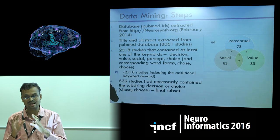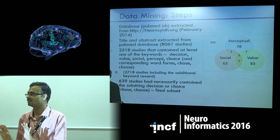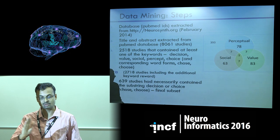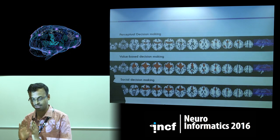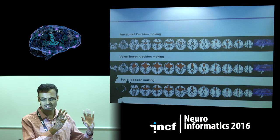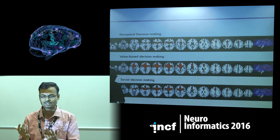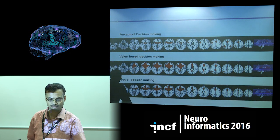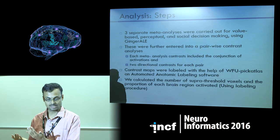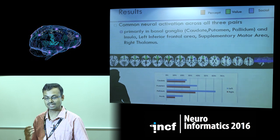Looking at this Venn diagram, there was just one study that had all three terms — perceptual, value, and social — and when I looked at the title it didn't make any sense as a decision making study. As a data processing person, I fixed my filtering criteria and proceeded. I do ALE meta-analysis separately for three different analyses, finding more or less a consistent thing but a different pattern of activation — striatum, orbital frontal cortex — the same areas we've been repeatedly publishing about.